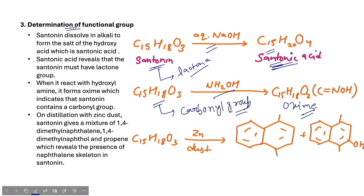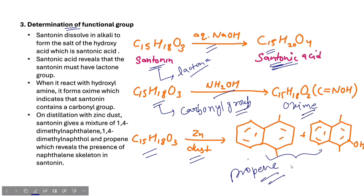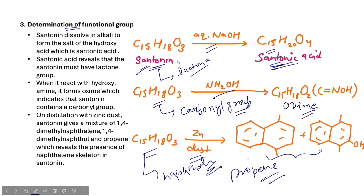As a third reaction, we subject Santonin to zinc dust distillation. From zinc dust distillation, we obtain 1,4-dimethyl naphthalene and propene. All these products indicate that the Santonin skeleton is based on naphthalene. These reactions give us information about the functional groups, which is further confirmed by the synthesis of Santonin.